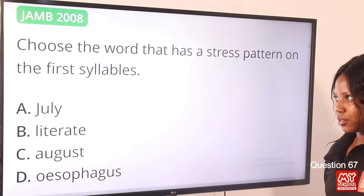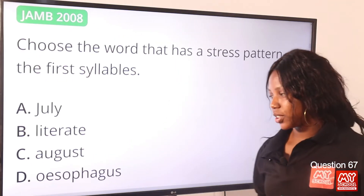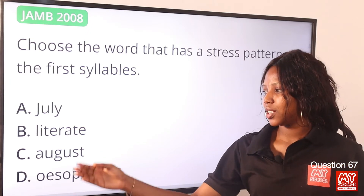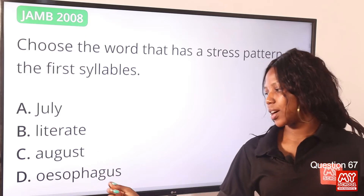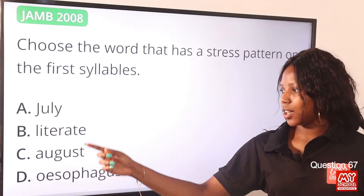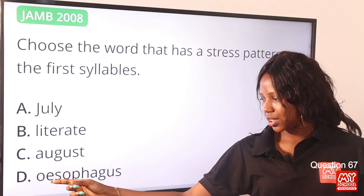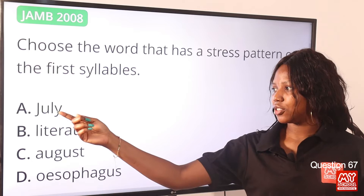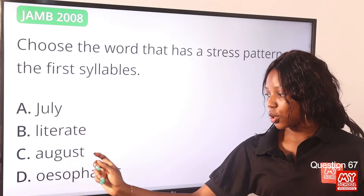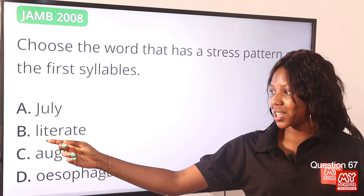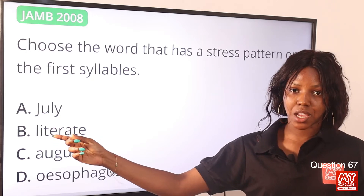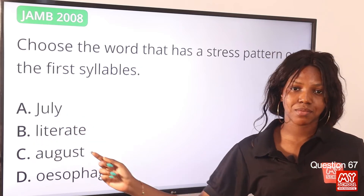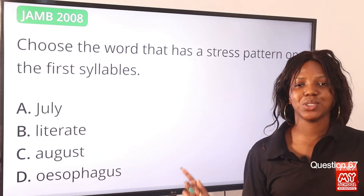Question 67. Choose the word that has a stress pattern on the first syllable. Option A: July. Option B: literate. Option C: august. Option D: adultery. Options A, C, and D are stressed on the second syllable — July, august, adultery. Option B is the only exception; it is stressed on the first syllable — literate. So option B is the correct answer.